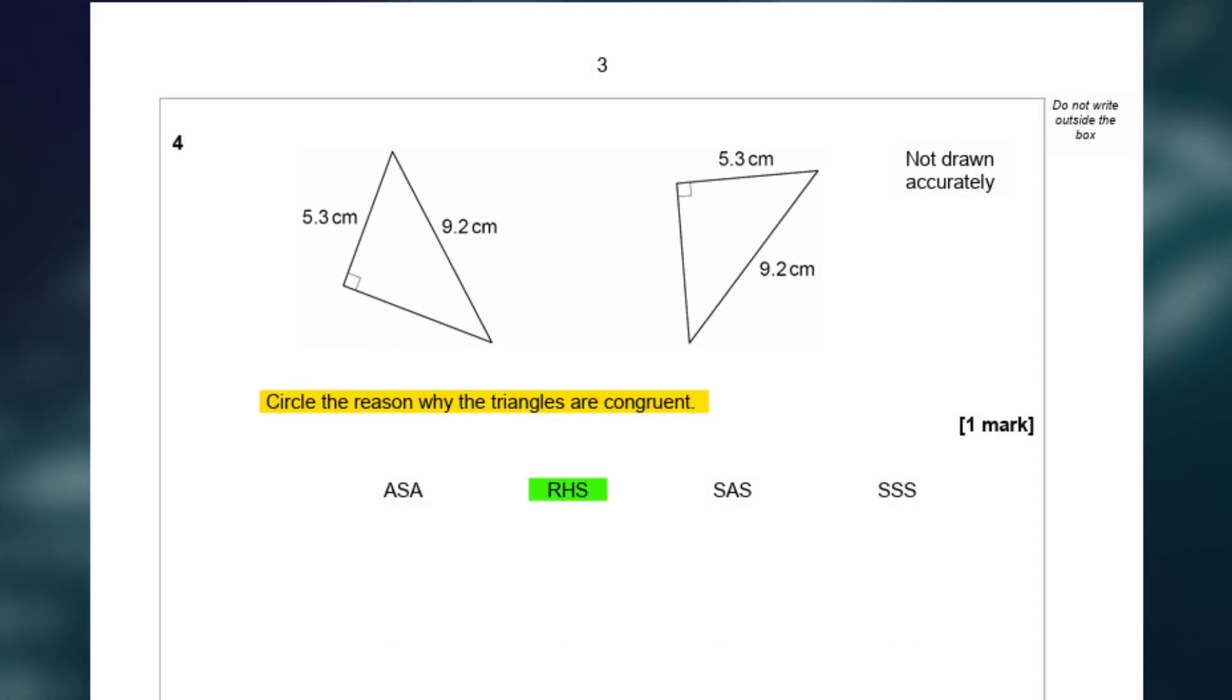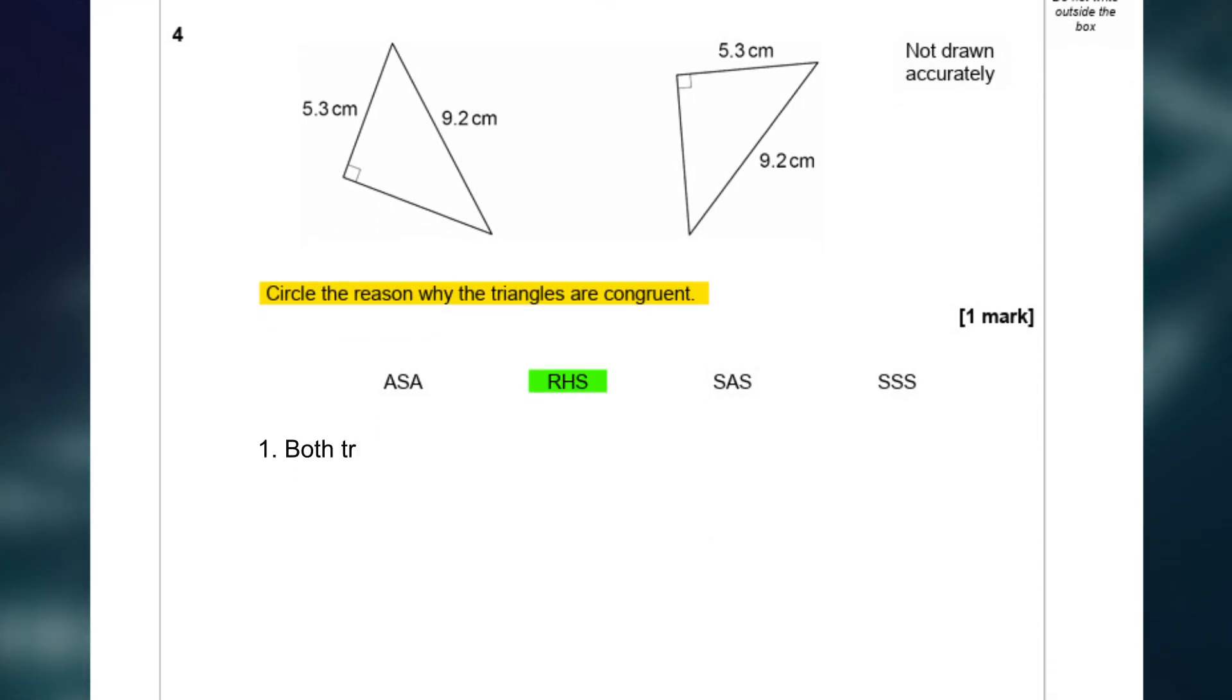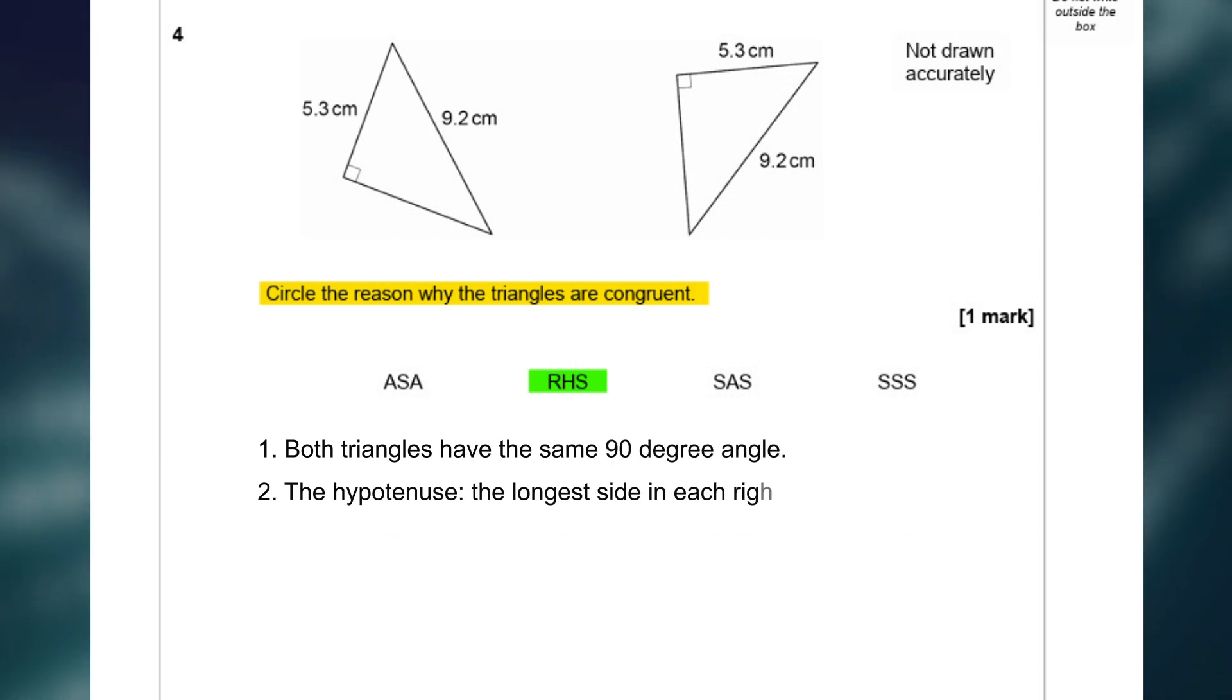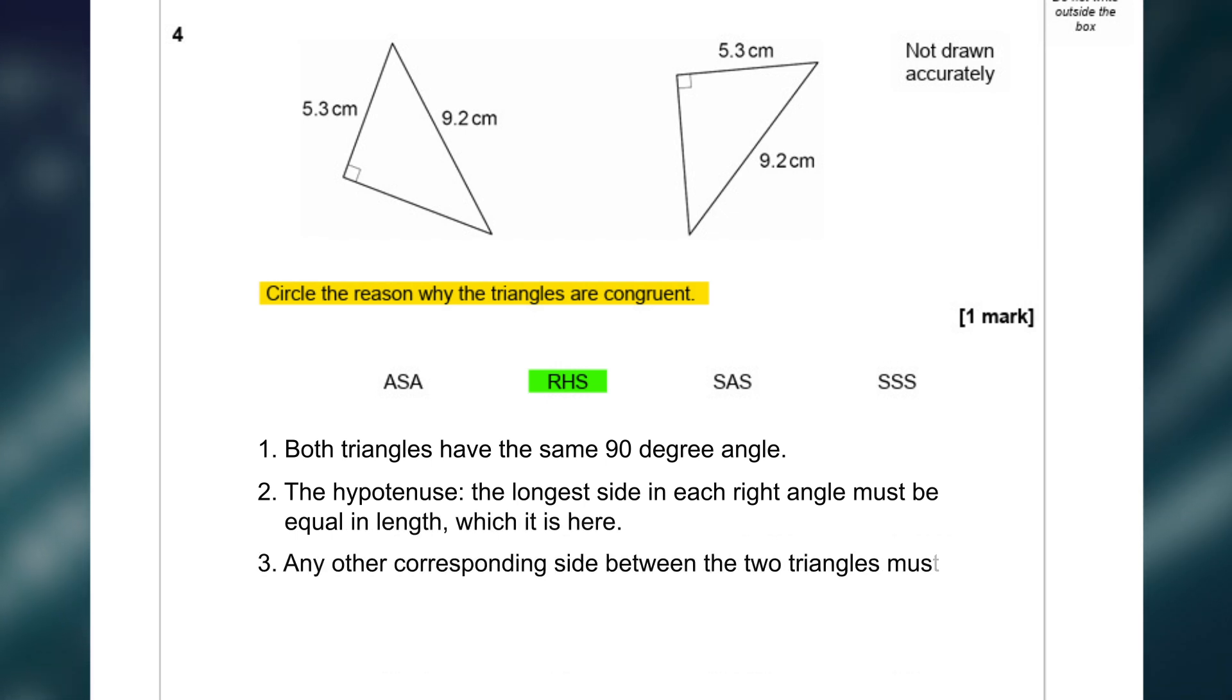The answer for this is the RHS rule. This is because number 1, both triangles have the same 90 degree angle. Number 2, the hypotenuse, the longest side in each right angle must be equal in length, which is here. And number 3, any other corresponding side between the two triangles must also be equal in length, which is here.